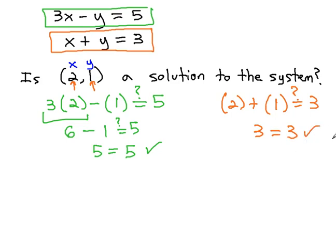Because (2,1) is the pair of numbers that works in both equations, we will say yes, (2,1) is a solution to the system.